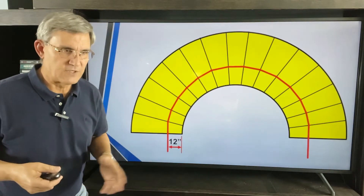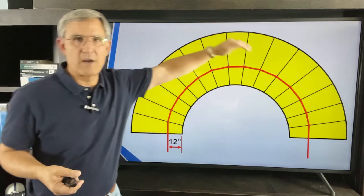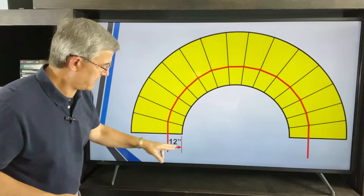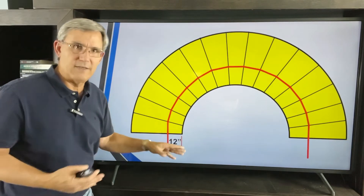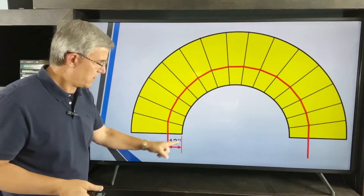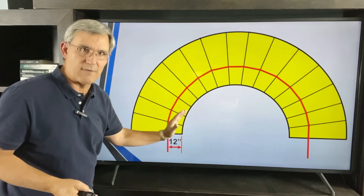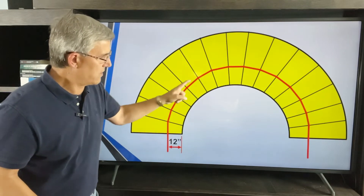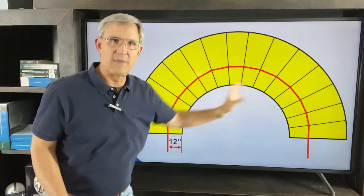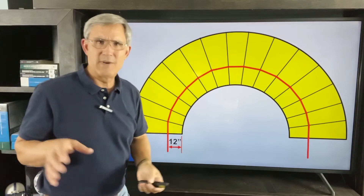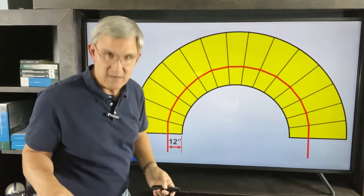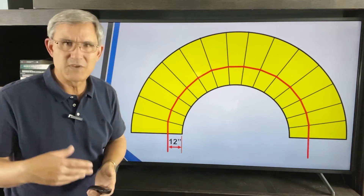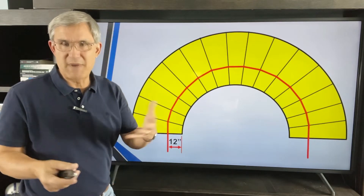Here's a 180-degree curve stair — a beautiful stairway in the entry of the home. They tell us the walk line is a mythical invisible line 12 inches from the inside radius. It comes out and goes up each tread all the way up the stair. That's the walk line.